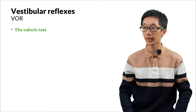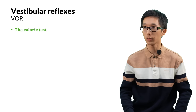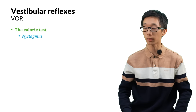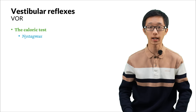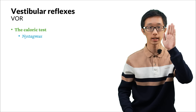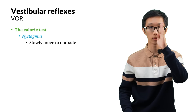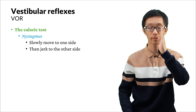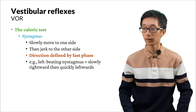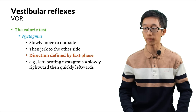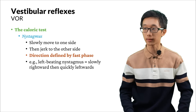We can test whether the vestibuloocular reflex is intact by the caloric test — this is a rather useful clinical practice. First, we need to understand what nystagmus is. Nystagmus is an involuntary, rhythmic, periodic turning of the eye. It usually involves a slow phase to one side and then a jerking phase back to the other side. The direction we name the nystagmus is defined by the fast phase. For example, a left-beating nystagmus means slowly moving rightwards and then quickly going back leftwards — that we call left-beating, and vice versa.